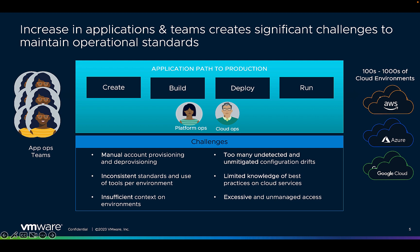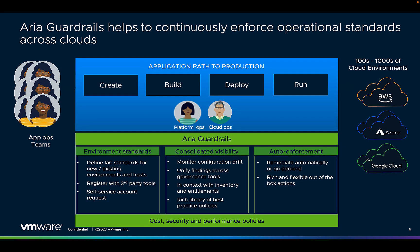Overall, cloud services can be complex and it can be difficult to stay up to date with best practices and emerging trends. It's important to invest in training, tooling, and education to ensure that staff have the necessary knowledge and skills to effectively manage and secure cloud services. To address these challenges, Guardrails helps establish clear infrastructure-as-code standards for new and existing environments, including naming conventions, resource provisioning, security and compliance requirements, and deployment procedures. Guardrails allows you to define and enforce these standards, ensuring that infrastructure is consistently managed and provisioned, leading to reduced errors and improved overall system reliability.